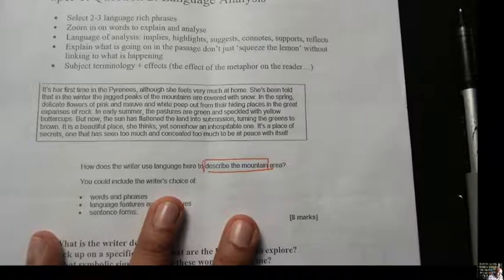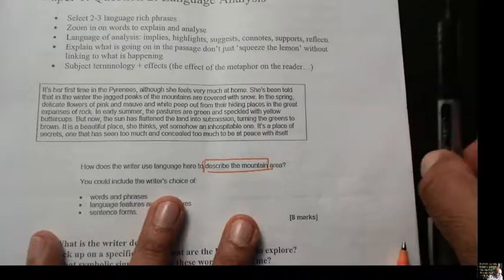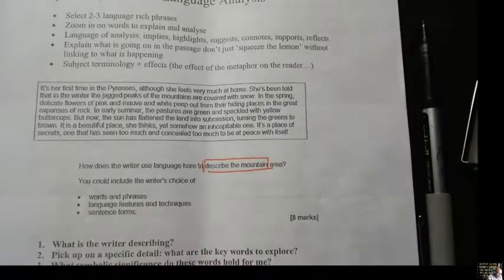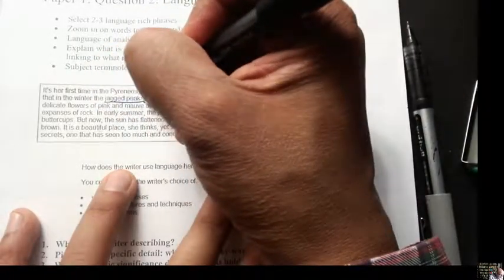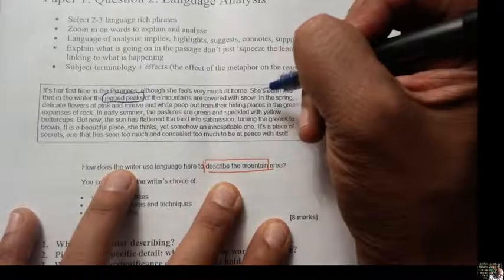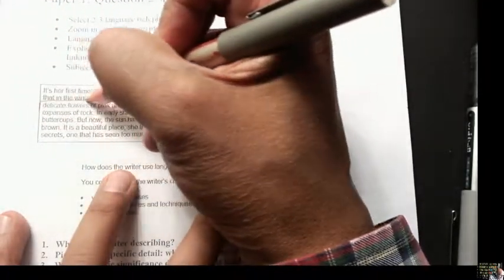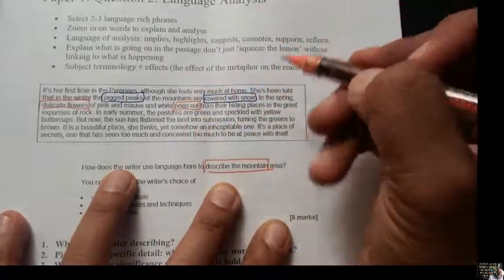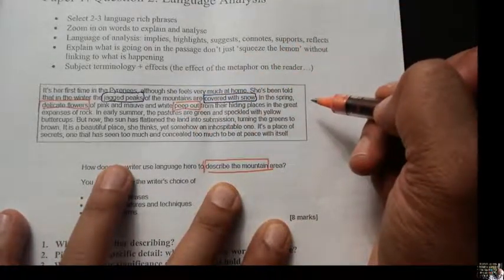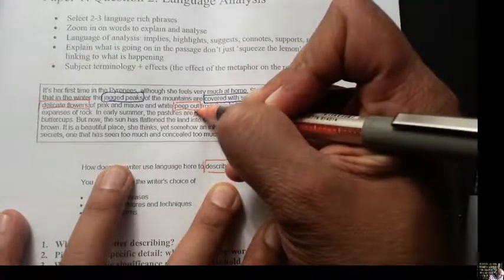It's her first time in the Pyrenees. The Pyrenees are a mountain range, although she feels very much at home. She's been told that in winter the jagged peaks, so the mountain, so right away, the jagged peaks of the mountain are covered with snow. In the spring, delicate flowers, pink and mauve and white, peep out from their hiding places in the great expanses of rock. In early summer, the pastures are green and speckled with yellow buttercups.